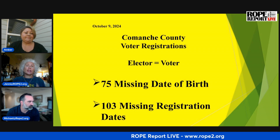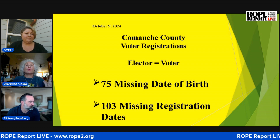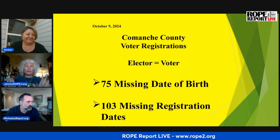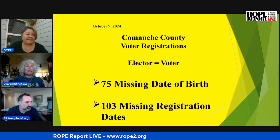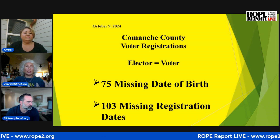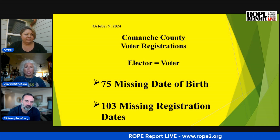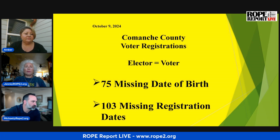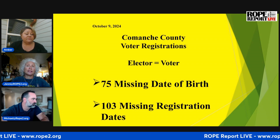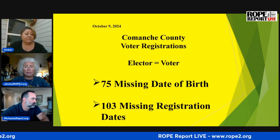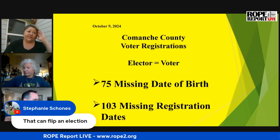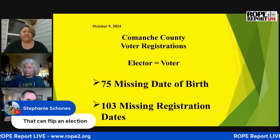We're not even talking about election security here — I know there's been a lot of that. We're talking about the fact that there are people in the system who are supposed to be valid electors in the state of Oklahoma who are not, who could be voting, who according to law should not be voting, and who could be changing election outcomes just by the fact that they are voting.